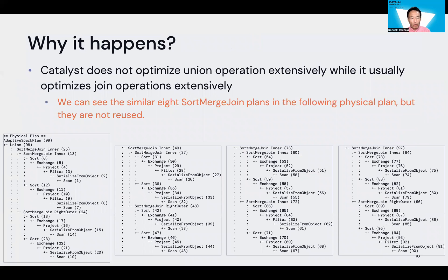Why do these data transfers happen? I visited the Spark SQL plans and put only the last physical plan here. You can see a lot of exchange operations involved, which involve data transfers. We can also see eight similar sort merge joins — some of which could be reused by analyzing the SQL plan.